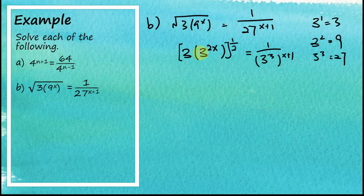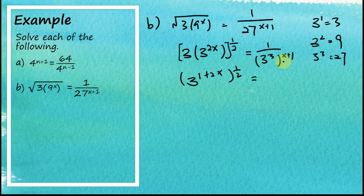Rewriting the left side: 3 to the power of 1 times 3 to the power of 2x gives 3 to the power of 1 plus 2x, all to the power of one half. On the right side, 1 over 3 cubed to the power of x plus 1 becomes 3 to the power of negative 3 times x plus 1. Now all bases are the same.